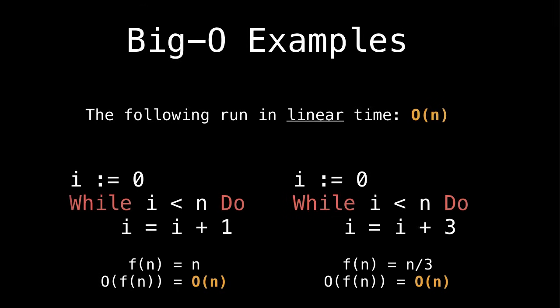Now let's look at a linear example. So both the following actually run in linear time with respect to the input size n, because we do a constant amount of work n times. So on the left, we're incrementing the counter i by one each time. So f of n is n. And clearly, when we wrap this in a Big O, we get a Big O of n. On the right, a little bit more complicated, we're not incrementing by one, we're incrementing by three. So we're going to finish that loop three times faster. So f of n is n over three.